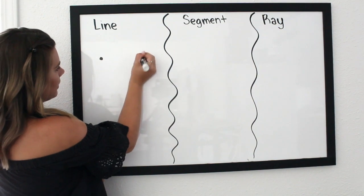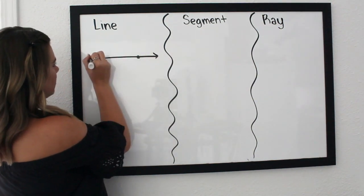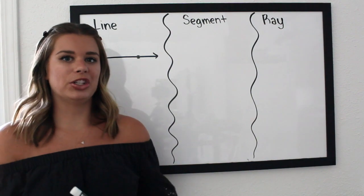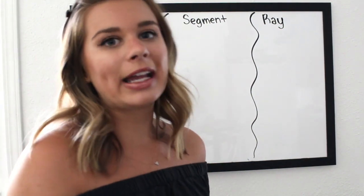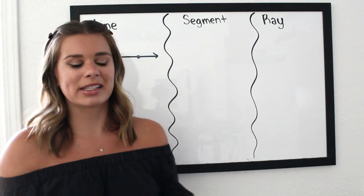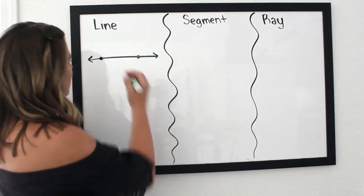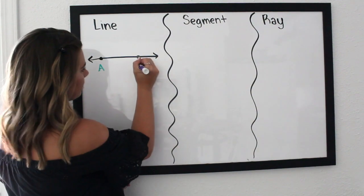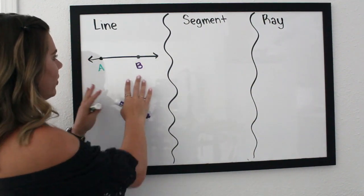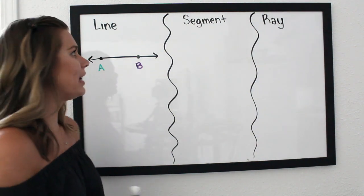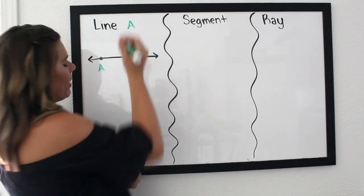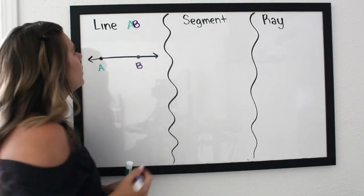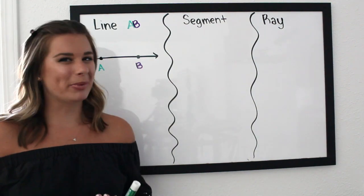In GeoGebra we learned how to label points, and that's very helpful with geometric diagrams. We're going to name this point A and this other point B, and together this gives us line AB — so we've given this line a name so that the reader knows exactly what we're talking about.